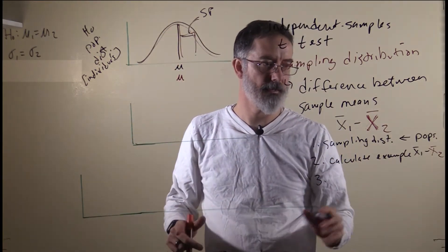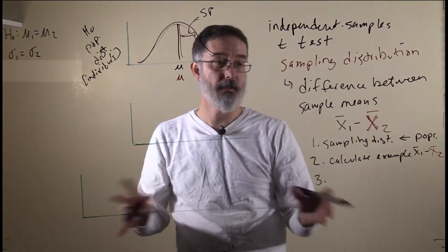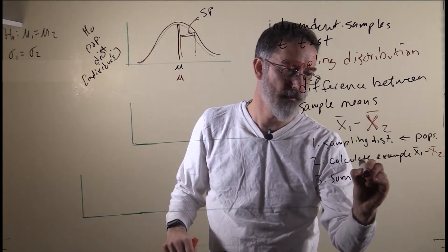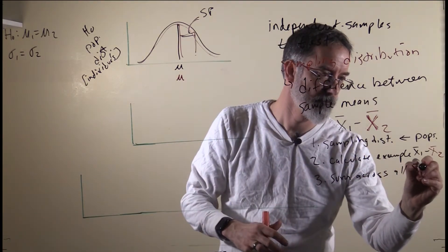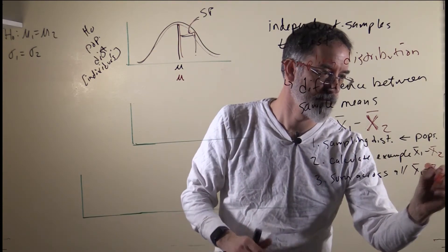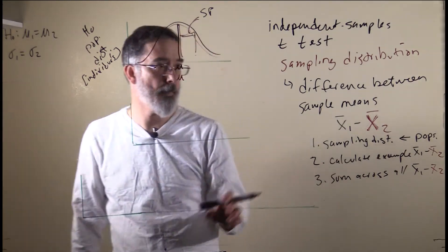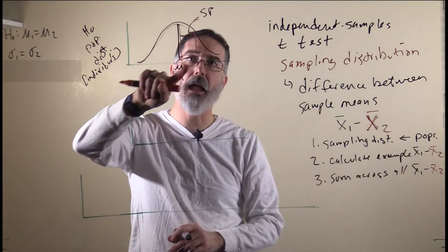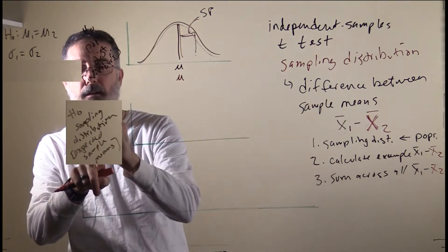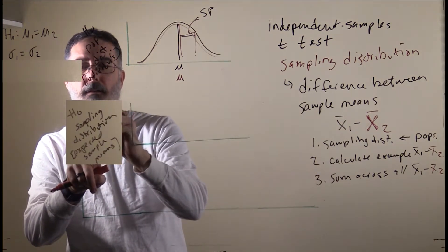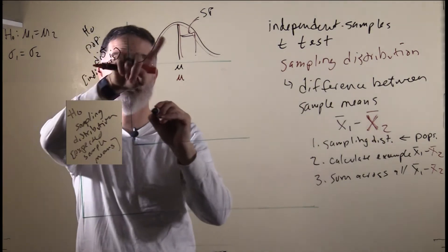The third thing we would need to do is for all of the different differences between the means, we would need to sum across those. So those are the three steps we are going to use. For the first step, creating the sampling distributions, let's think about the black distribution and create the kind of expected sample means we would get from there. These are our sampling distributions, and these assume the null hypothesis is true — that is where these populations came from.